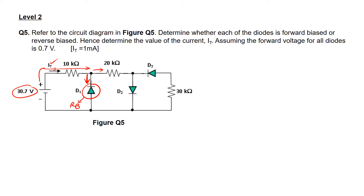The current approaching the 20k ohm resistor continues to a node where it splits into two paths again. The current that goes down towards diode D2 is trying to enter from the anode side of D2, therefore diode D2 will be forward biased. Lastly, the remaining current is trying to enter from the cathode side of diode D3, so it's blocked — therefore diode D3 is reverse biased.